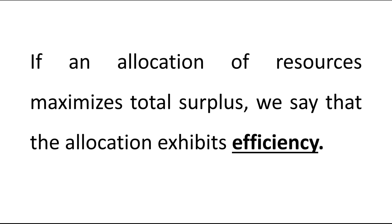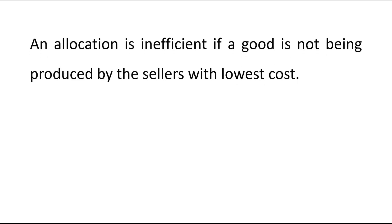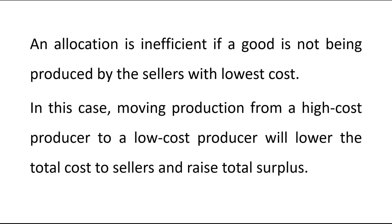An allocation is inefficient if a good is not being produced by the sellers with the lowest cost. In this case, moving production from a high-cost producer to a low-cost producer will lower the total cost to sellers and will increase the total surplus.